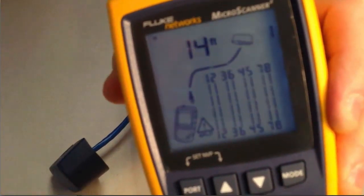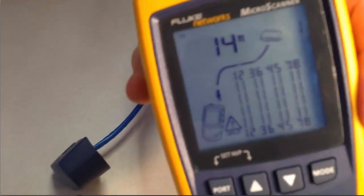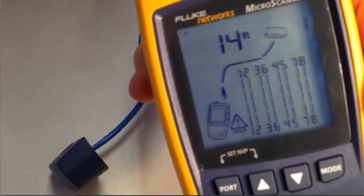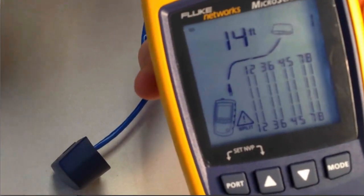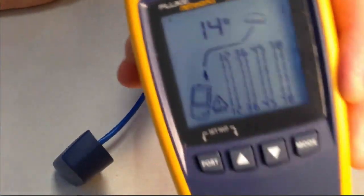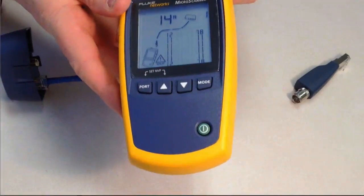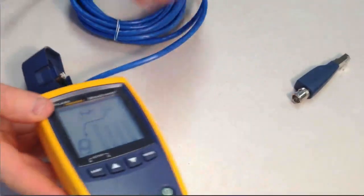So what we've done here is we've measured a split pair. We've measured something that had a bad connection. We've measured good cables. And we've used a couple different IDs, types of tags, that are available with these types of units.